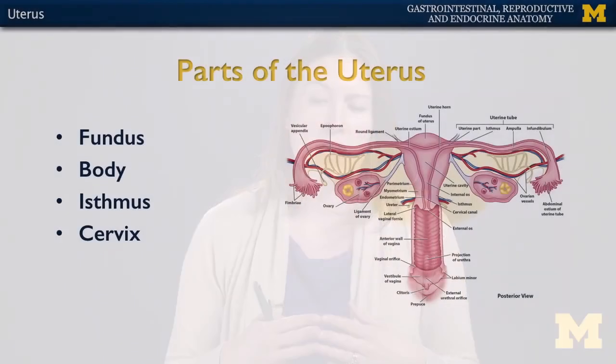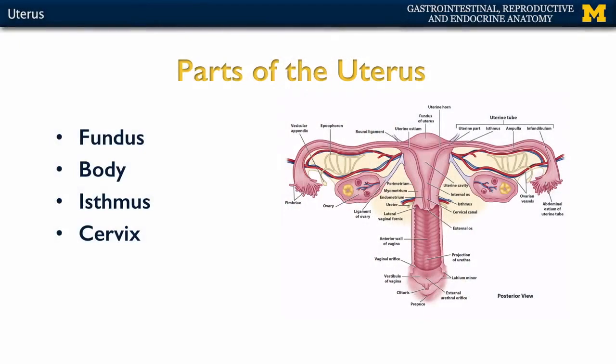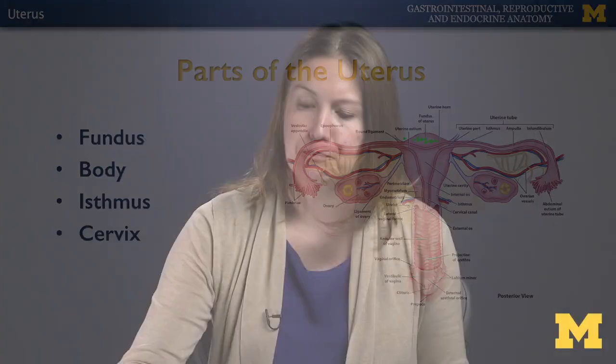Let's talk about the different parts of the uterus. We're going to start with the most superior portion, which is the fundus. The fundus is this area that's superior to the uterine tubes, or where the uterine tubes attach to the uterus. That's really important in terms of understanding which direction or tilt the uterus has.